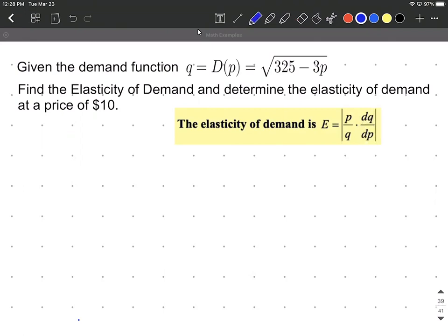So to get going on this, the components that we need to collect - we know that our price is 10, that's given to us. The quantity is going to be the same thing as the demand at $10. So substituting that into our function, we have the square root of 325 minus 3 times 10. So that's the square root of 325 minus 30 is 295. So that's going to be our value we plug in for Q.